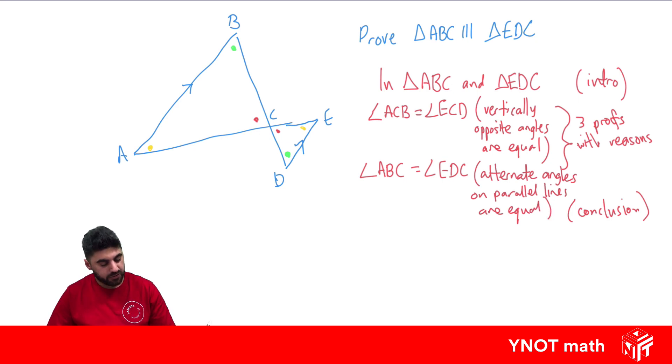Since we've proven that two angles are equal, that's enough, that's all we need. Automatically the third one's equal because of angle sum of the triangle. Therefore, triangle ABC is similar to triangle EDC. We have to give our reason, and in this case, it's because they're equiangular.